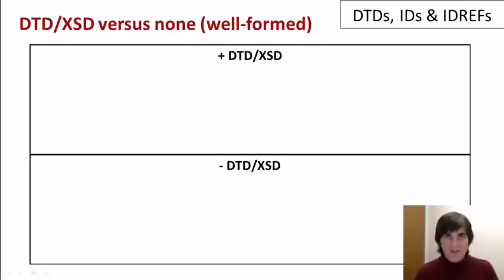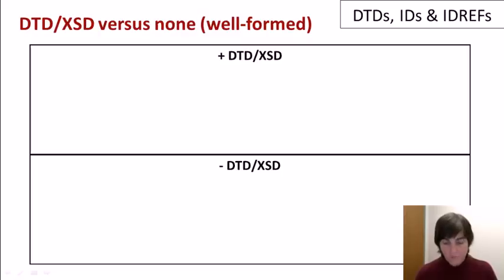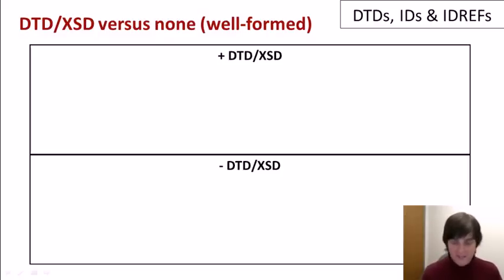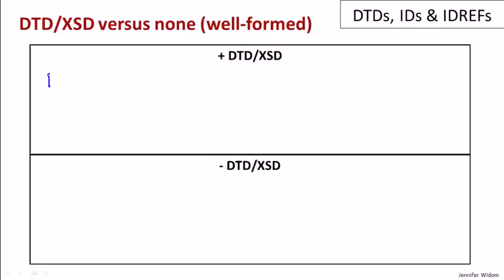Before moving to the demo, let's talk about the positives and negatives of choosing to use a DTD or an XSD. If you're building an application that encodes its data in XML, you'll have to decide whether you want the XML to just be well-formed, or whether you want to require the XML to be valid. A first positive is that when you write your program, you can assume that the data adheres to a specific structure, so programs can assume a structure and are simpler because they don't have to do a lot of error checking on the data.